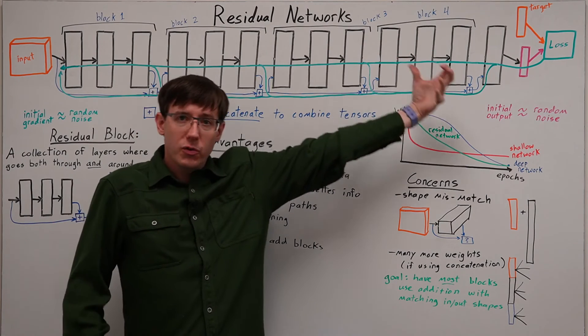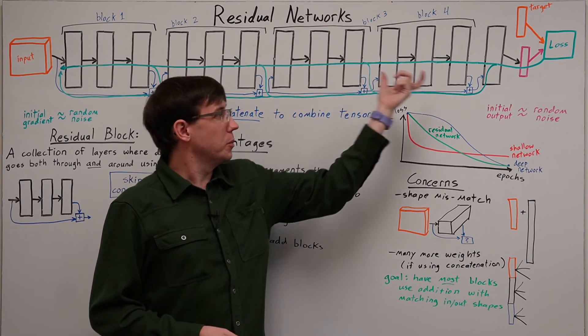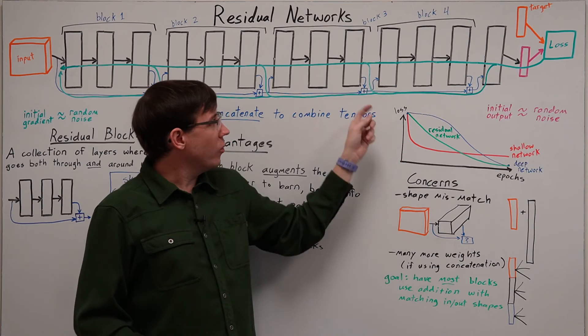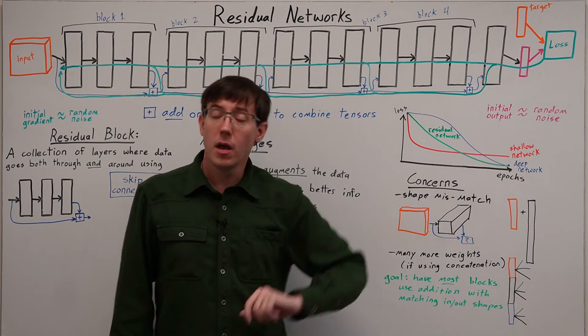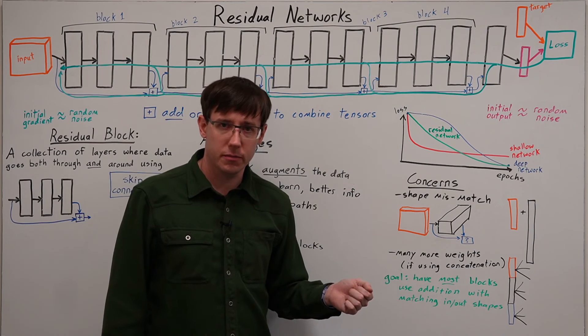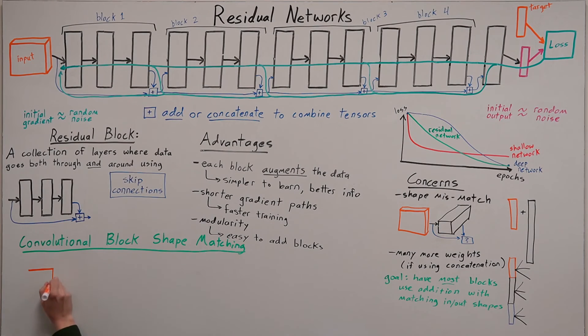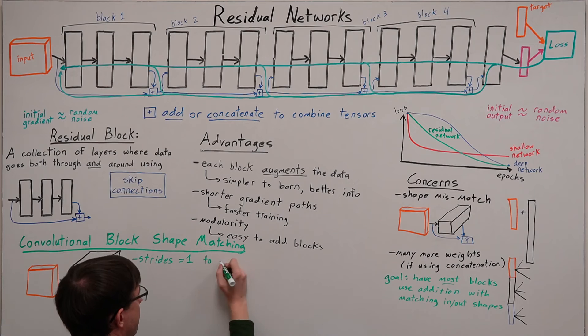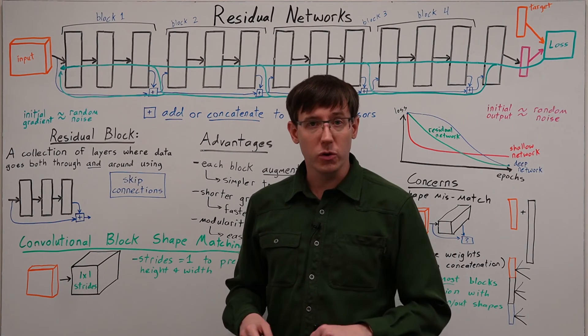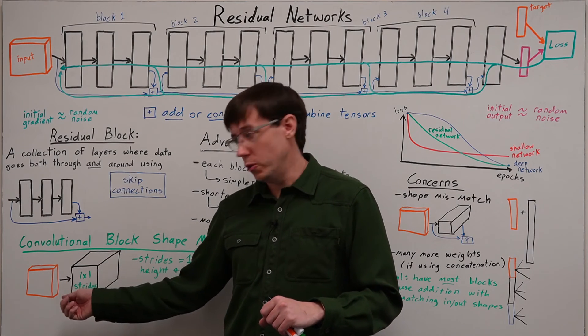And so when we're building a large residual network, we'll generally use addition for most of the skip connections, and we'll try and have most of the blocks use a consistent shape so that we can match up the inputs and the outputs. But it's worth spending a little extra time to think about how can we achieve this goal when we're using convolutional layers.